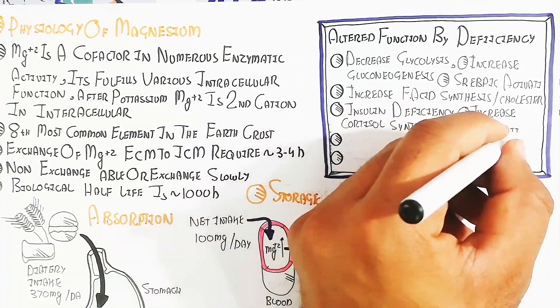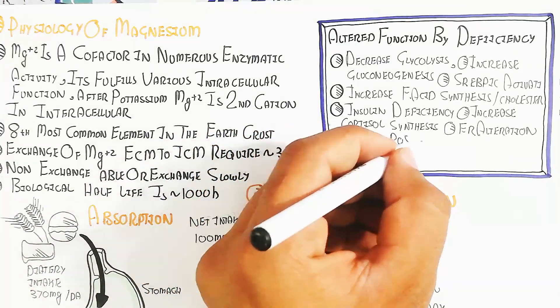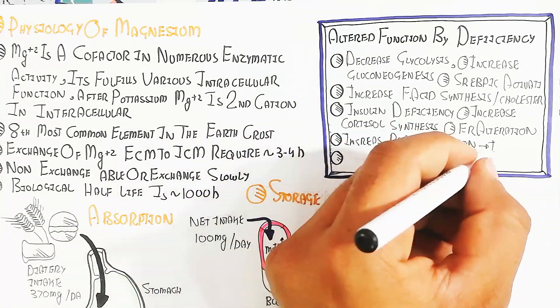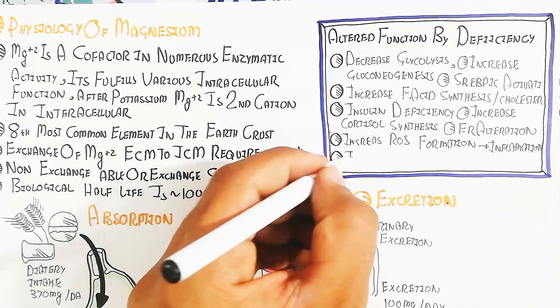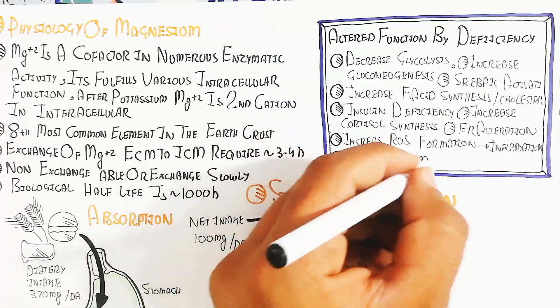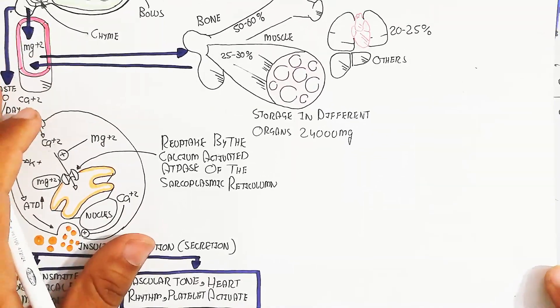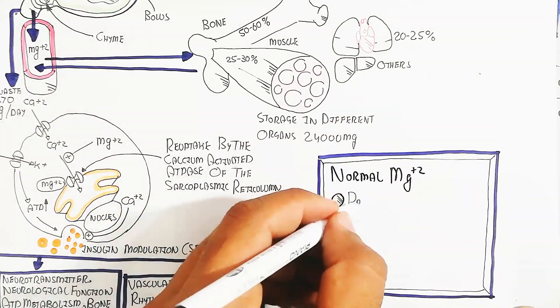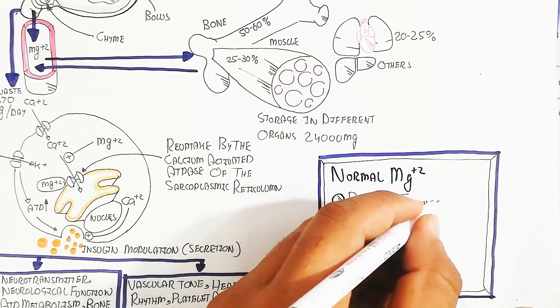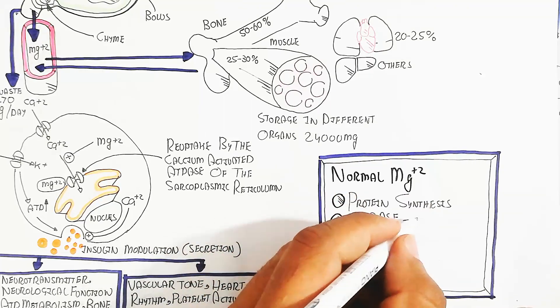Insulin deficiency increases, and increased cortisol synthesis leads to sympathetic nervous system activation. Endoplasmic reticulum alteration and increased reactive oxygen species formation lead to inflammation and immune system activation.